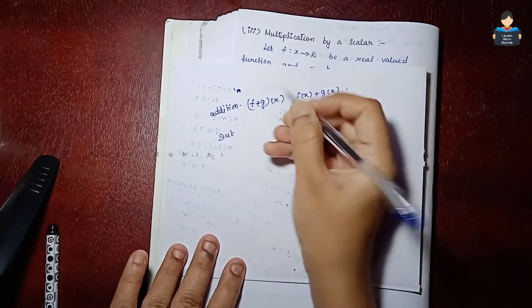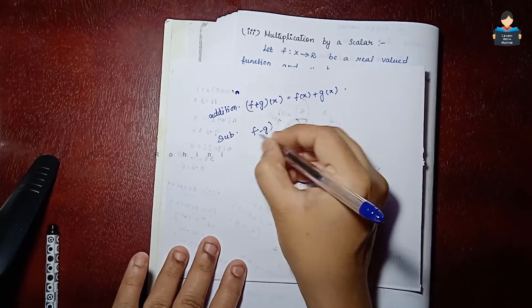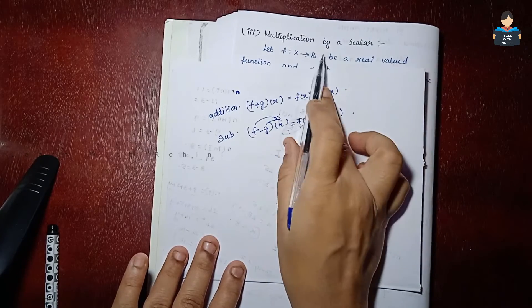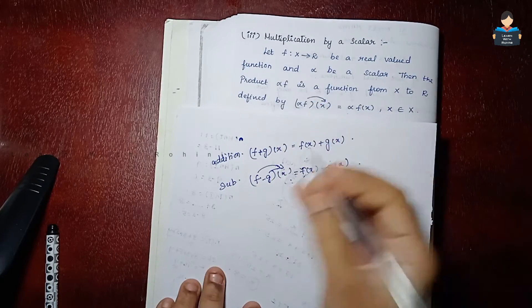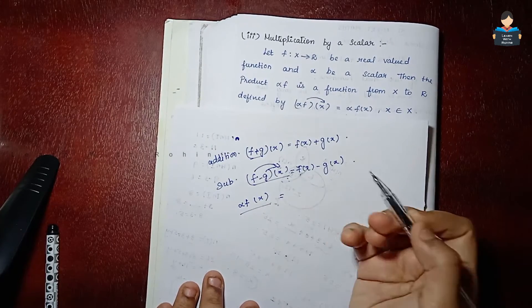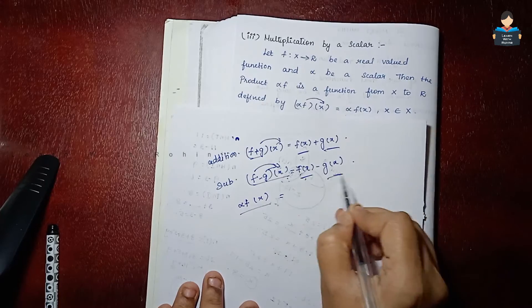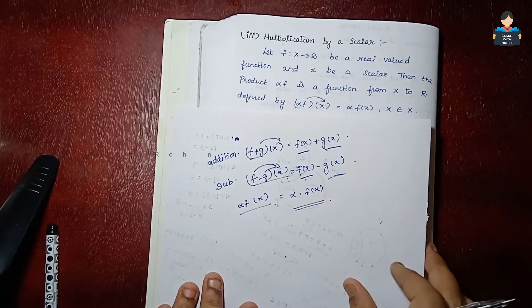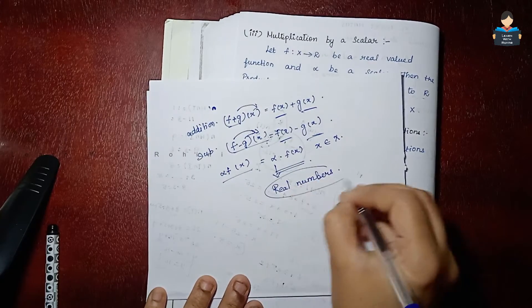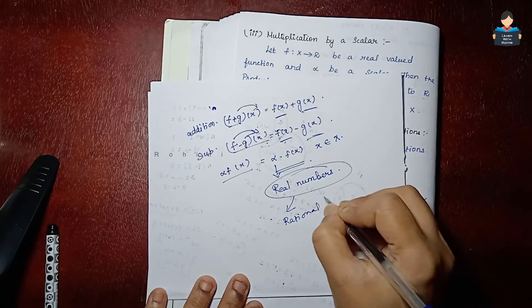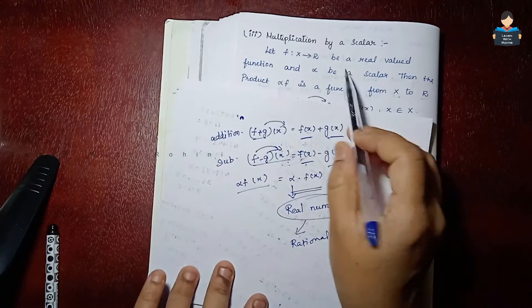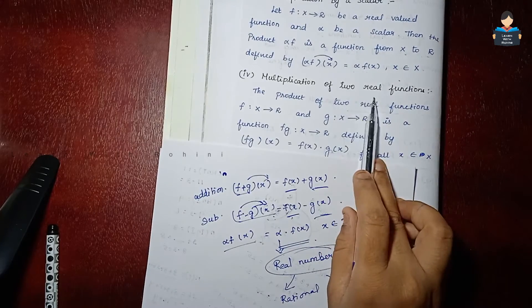So alpha into f of x equals alpha times f of x, for all x element of x, where alpha is a real number — that is, rational or irrational numbers.